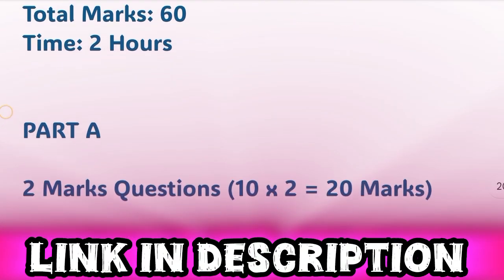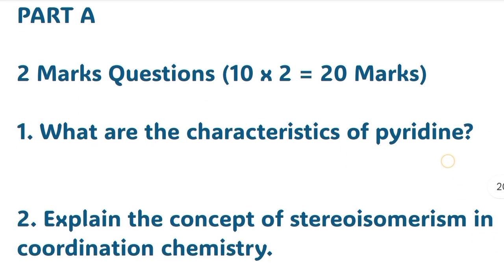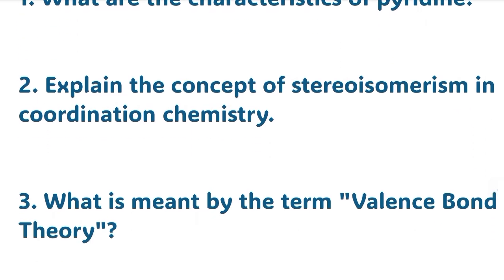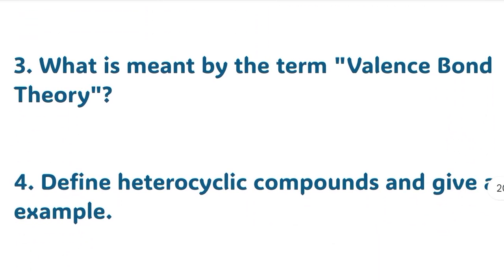First we will discuss two marks questions. The first question is: What are the characteristics of pyridine? Second: Explain the concept of stereoisomerism in coordination chemistry. Third: What is meant by the term valence bond theory? Fourth: Define heterocyclic compounds and give an example.